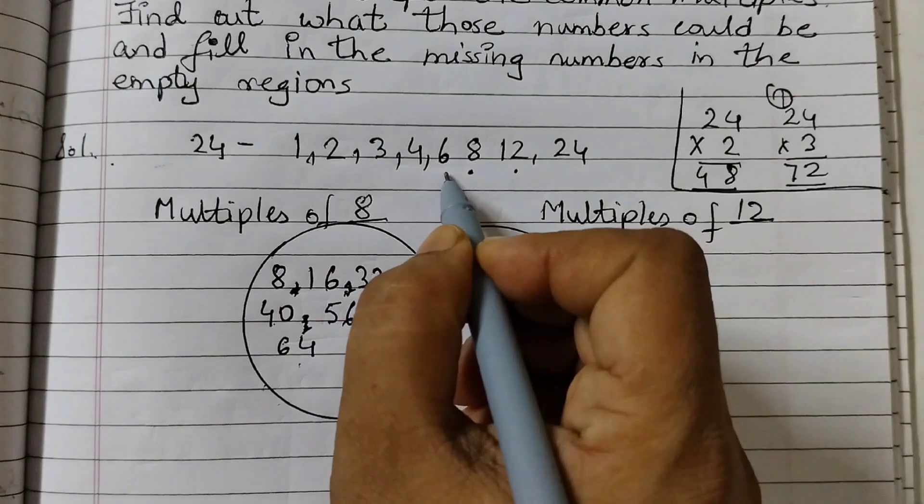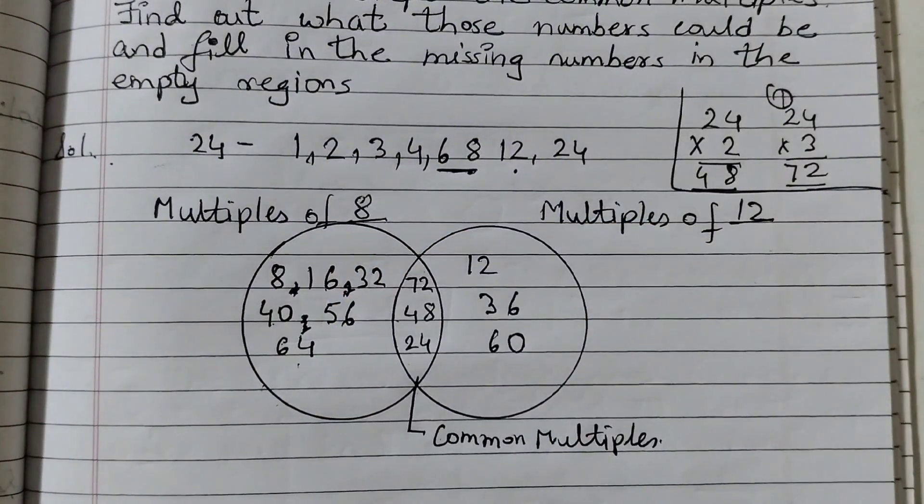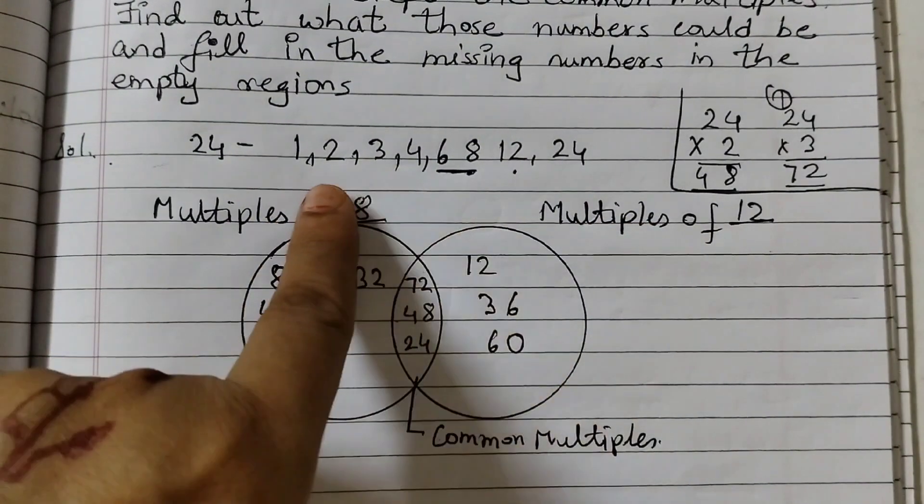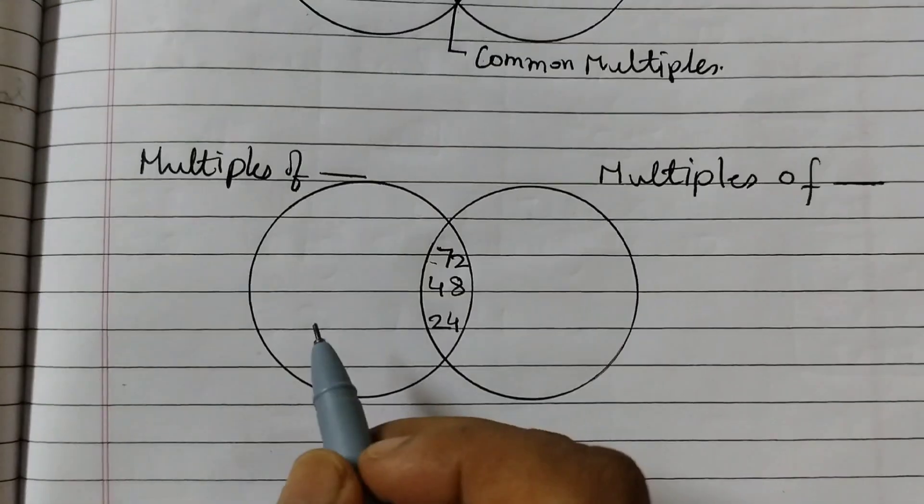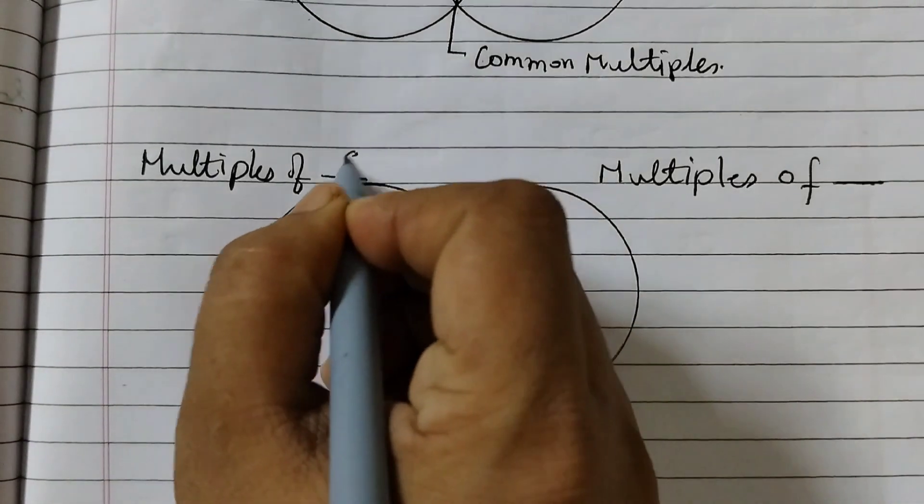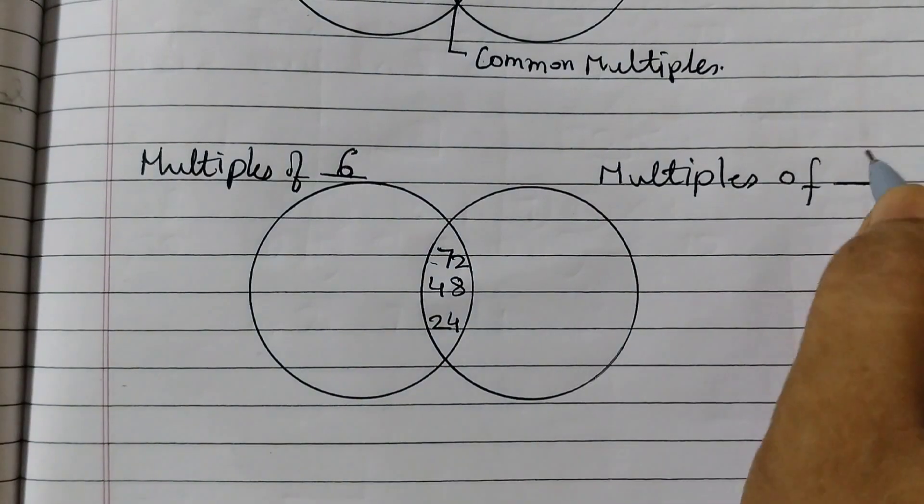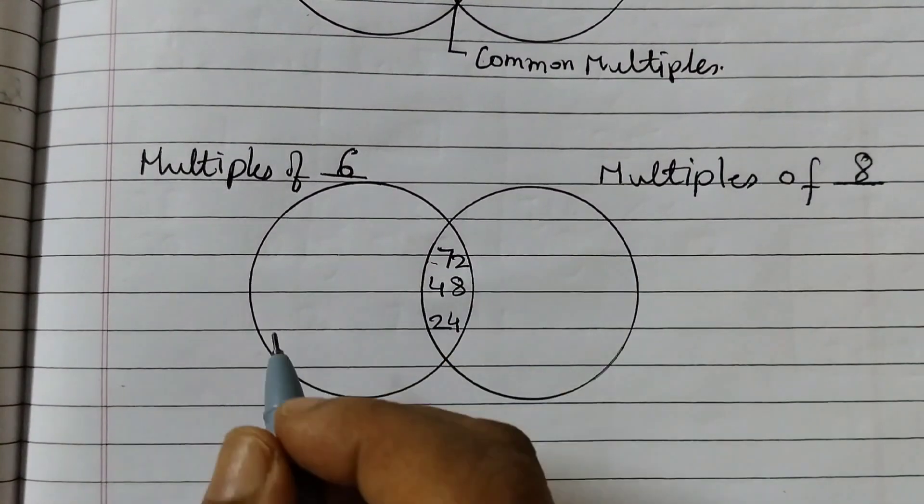Now let's take one more pair. Let's take 6 and 8. You can take any one pair from here. I am just showing you for explanation purpose. I am taking multiples of 6 on the left side and multiples of 8 here.